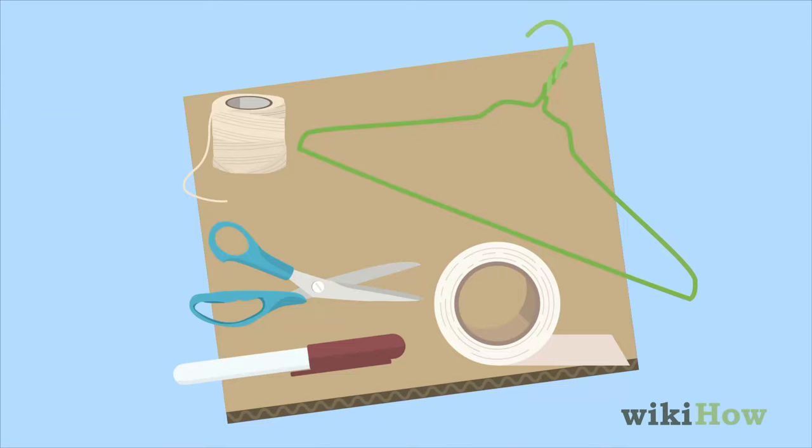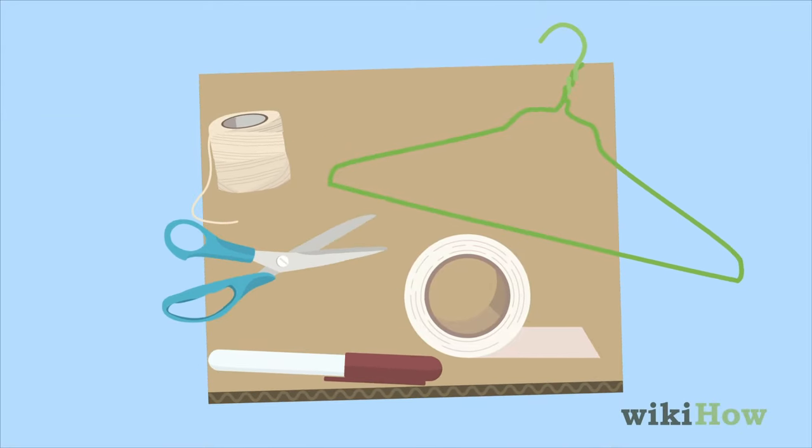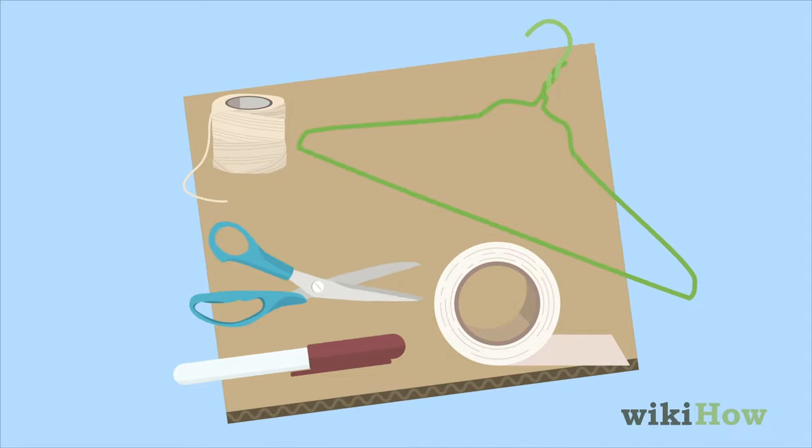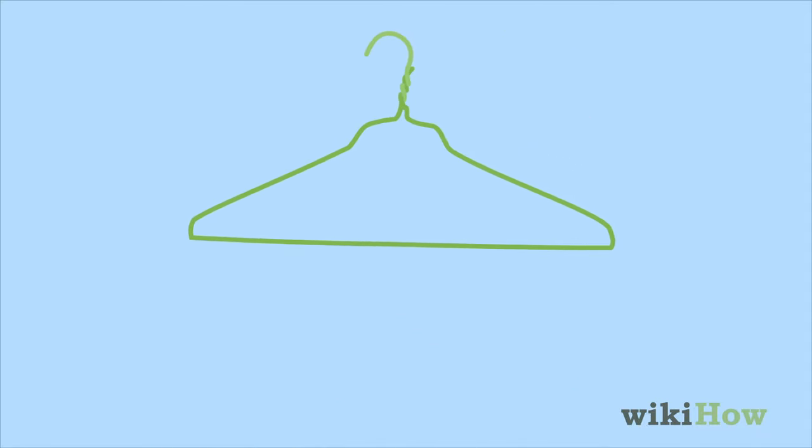To make a basketball hoop from your room, all you need are some common household items. Take a wire hanger and bend it into a circle.